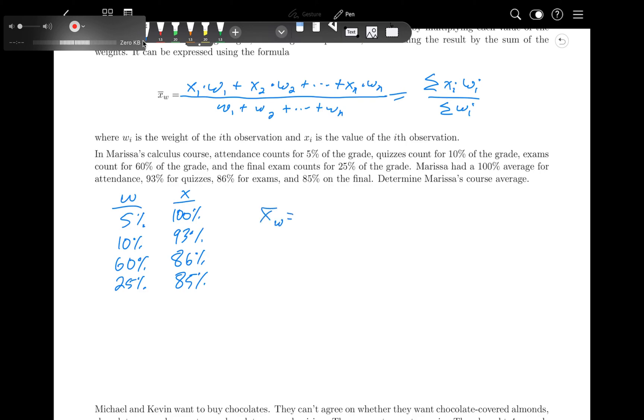So the weighted mean is the data value times its weight for each one over the sum of the weights. So 5 plus 60 plus, which I'm doing out of order, 5 plus 10 plus 60 plus 25. And so then we just put that in our calculator.